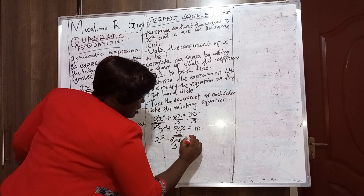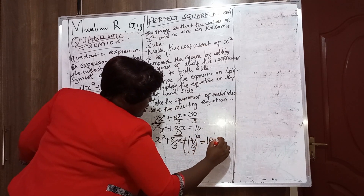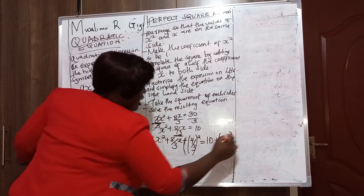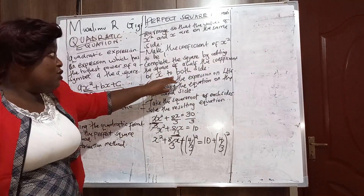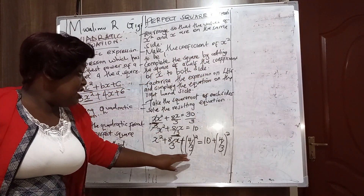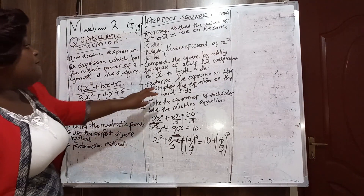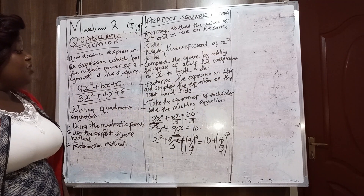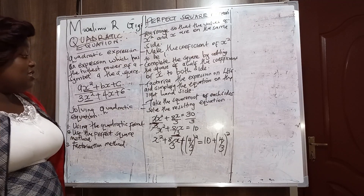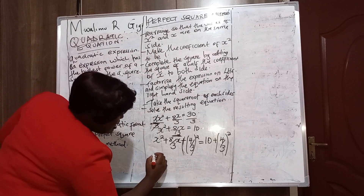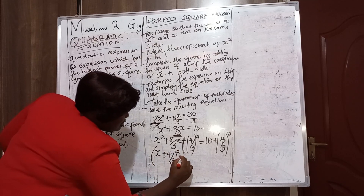So x² + (8/3)x + (4/3)² = 10 + (4/3)². We add the square of half the coefficient of x to both sides. The next step is to factorize the expression on the left-hand side and simplify the equation on the right-hand side. We write: (x + 4/3)² = ...